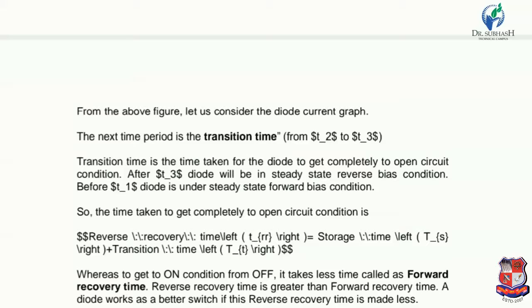To get to ON condition from OFF, it takes less time — this is called forward recovery time. Reverse recovery time is greater than forward recovery time. A diode works as a better switch if the reverse recovery time is made less. If the reverse recovery time is reduced, the diode can perform switching operations more effectively and its effectiveness increases.